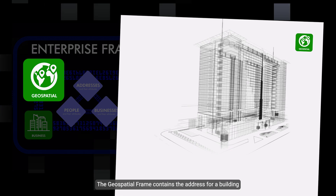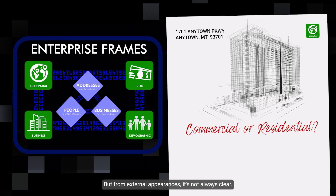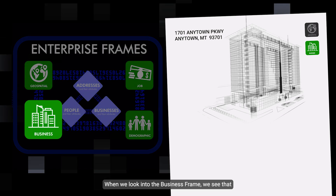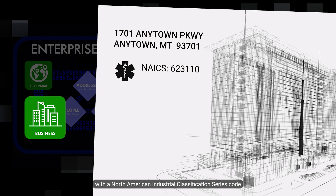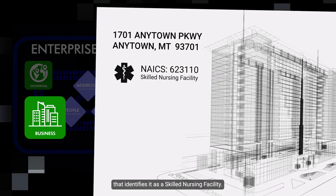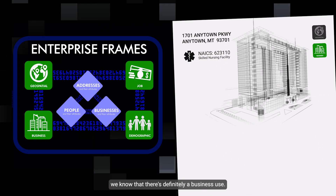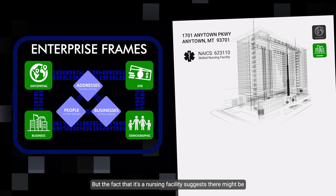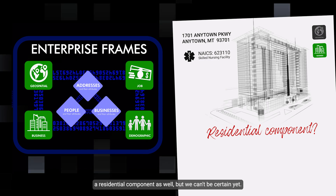The geospatial frame contains the address for a building, which may be commercial or residential. But from external appearances, it's not always clear. When we look into the business frame, we see that there's a business at the location with a North American Industrial Classification Series code that identifies it as a skilled nursing facility. So from this information, we know that there's definitely a business use. But the fact that it's a nursing facility suggests there might be a residential component as well, though we can't be certain yet.